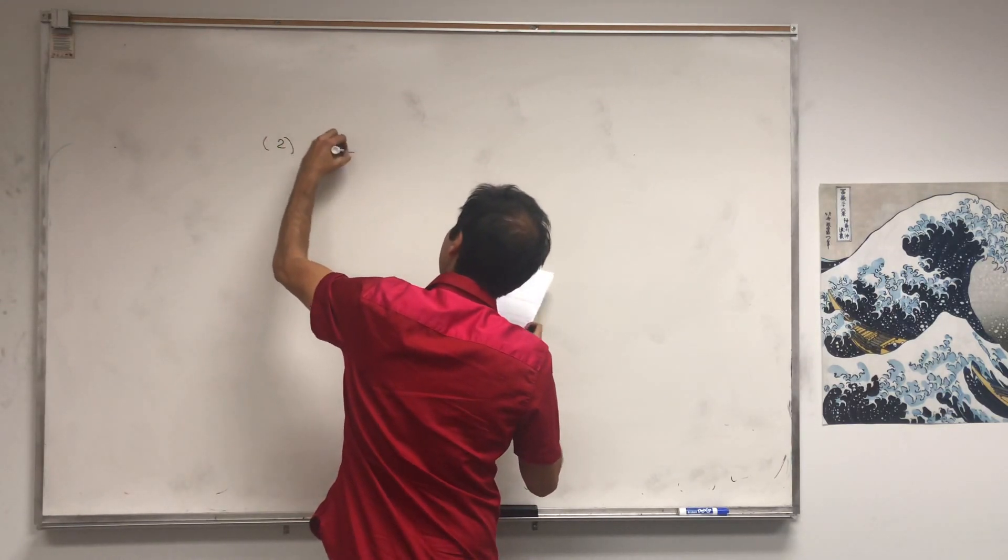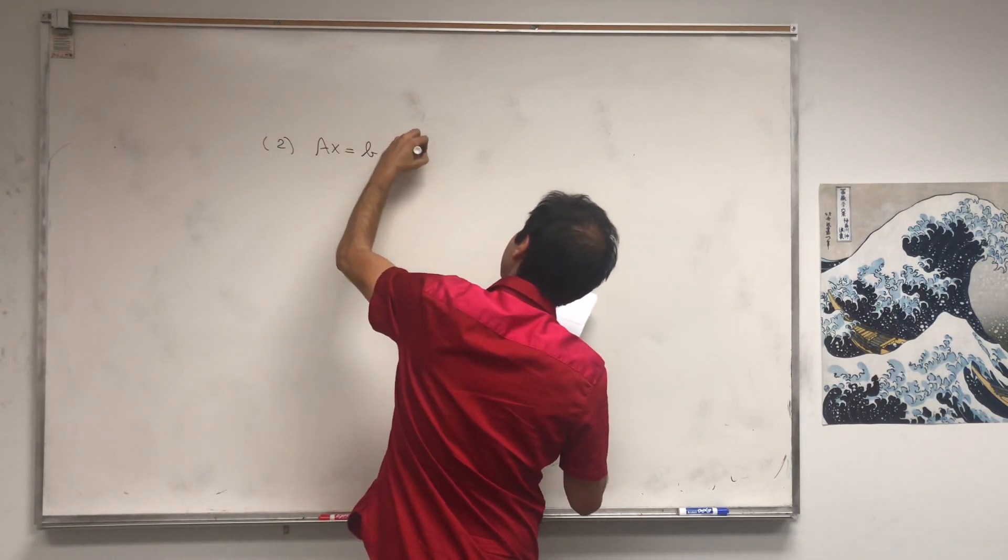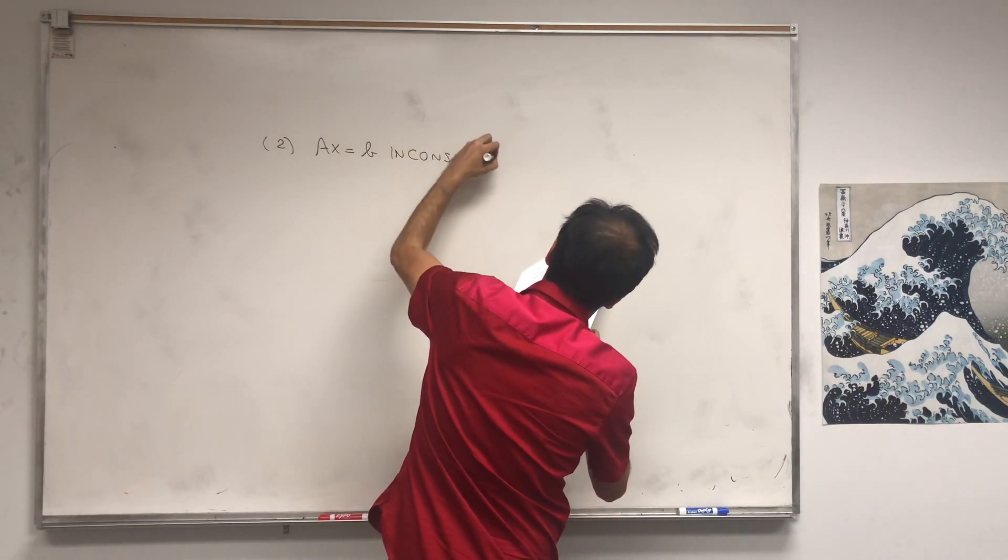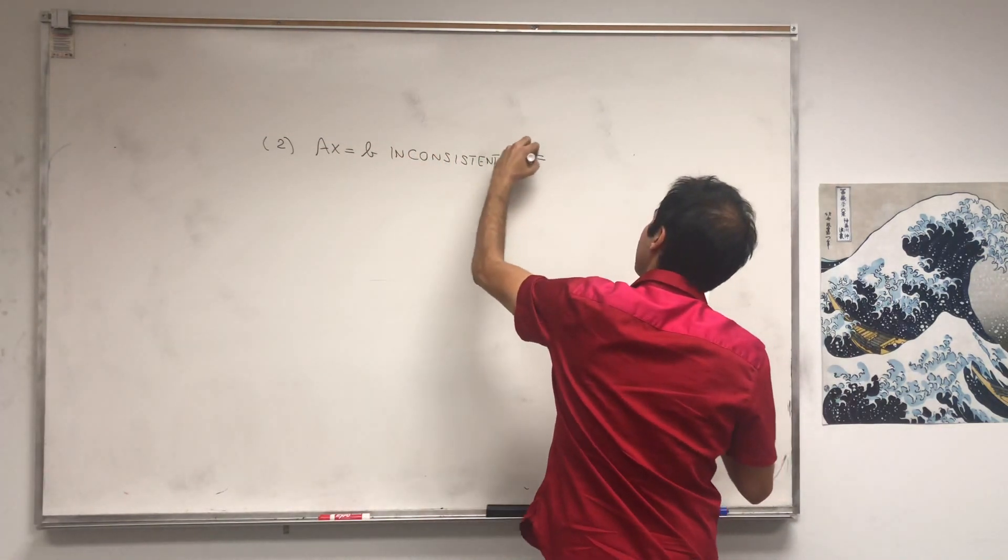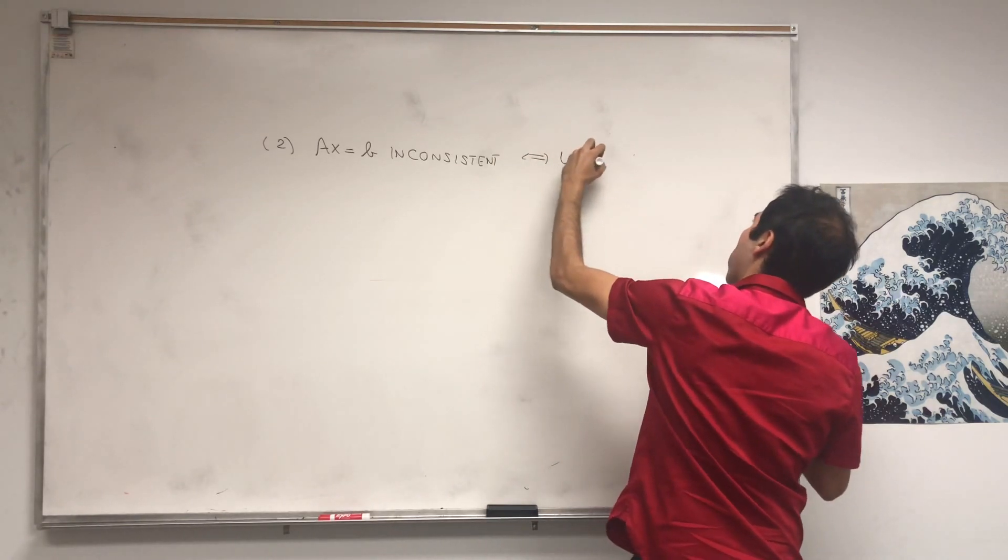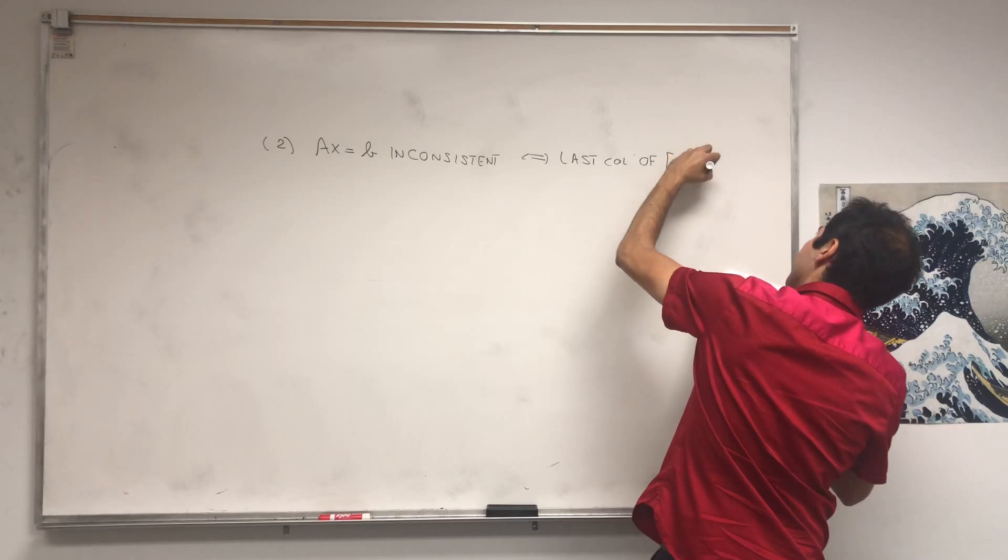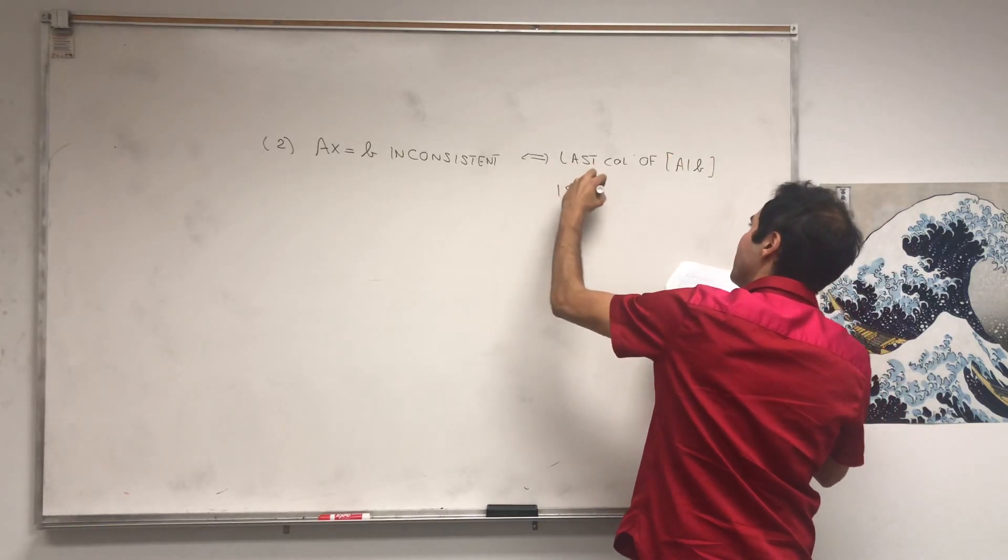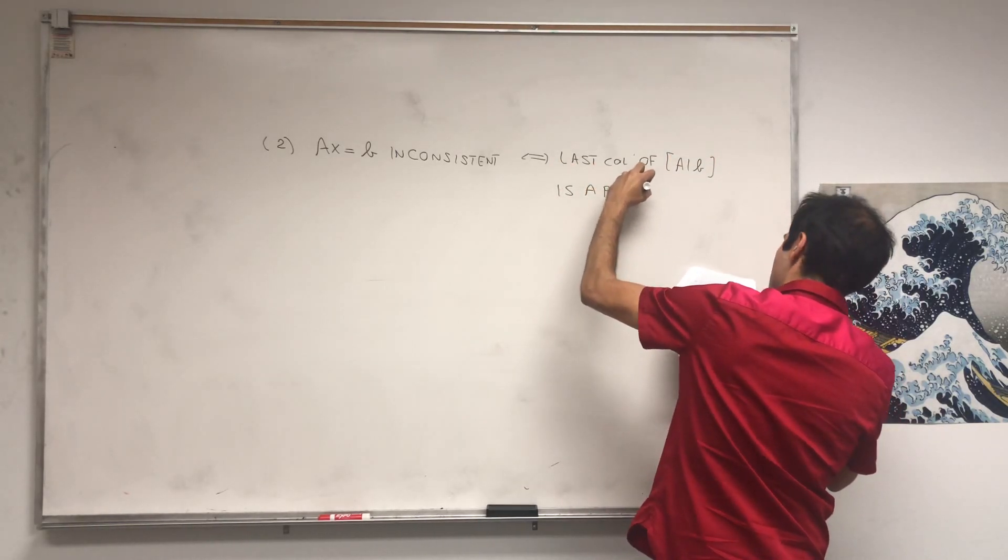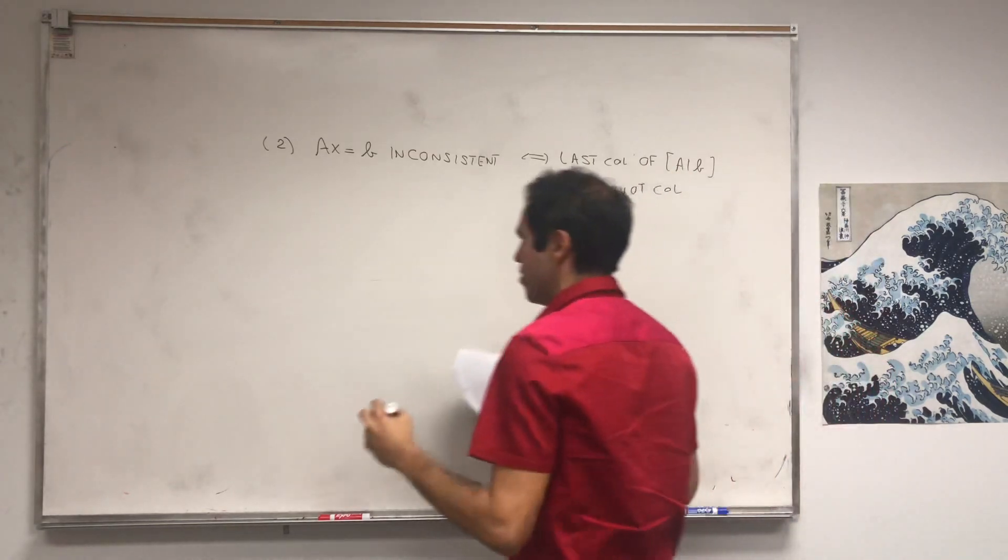AX equals B is inconsistent if and only if the last column of [A|B], the augmented matrix, is a pivot column.